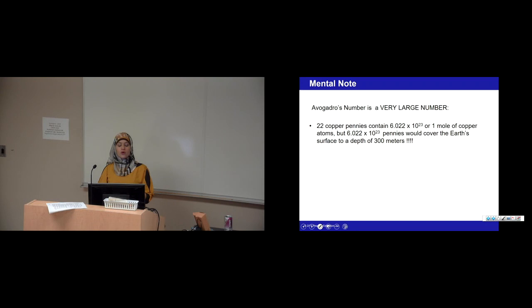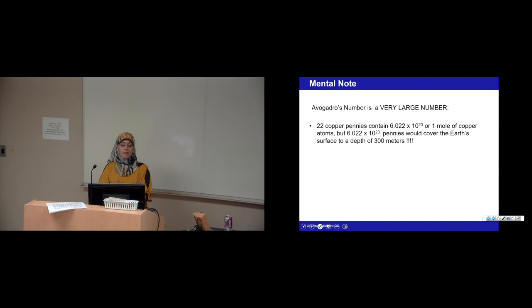Avogadro's number is very huge. For example, 22 copper pennies contain 6.022 times 10 to the 23rd atoms — that's about one mole. But if you have 6.022 times 10 to the 23rd pennies, that would cover the Earth's surface to a depth of 300 meters.